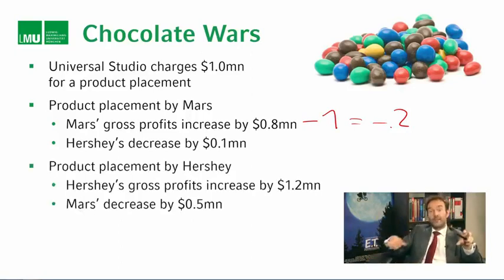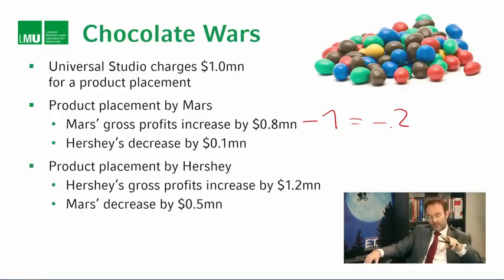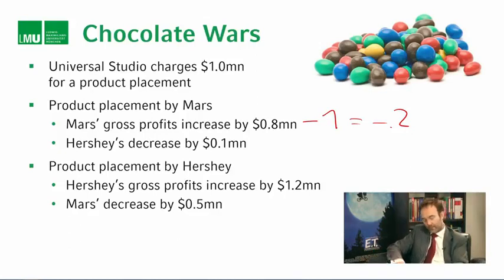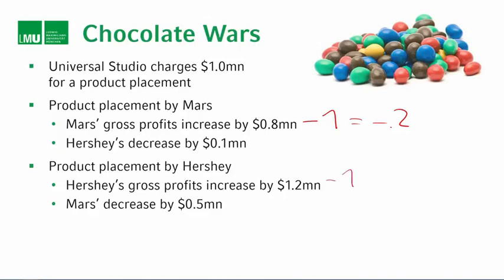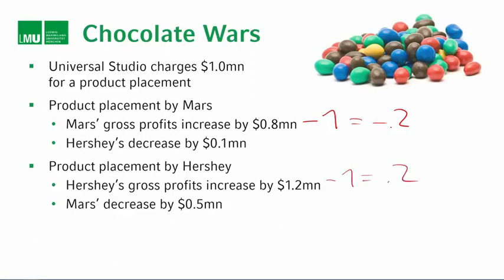What actually took place was product placement by Hershey's. Their gross profits would increase by $1.2 million, giving net profits of positive $200,000 after the $1 million fee. Mars' profits decreased by $500,000. If neither of them signed, it's just business as usual — no profits change, both get zero. This situation was highly strategic because what happened depended on what the other firm did.